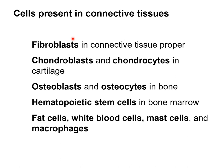Fibroblasts are blasts, so they secrete fibers like collagen, elastic fibers, and reticular fibers — we find these in connective tissue proper. Chondroblasts: chondro means cartilage, so chondroblasts are cells in cartilage that secrete the matrix of cartilage, which is a gel-like substance; when they're done they become chondrocytes. Osteoblasts secrete bone material until they become osteocytes, where they are just merely maintaining the area. So we see the difference between blasts and cytes in these two examples.